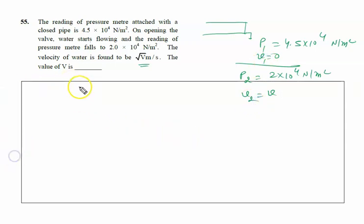If you apply Bernoulli's theorem for the same horizontal level, it will be P + ½ρV² = constant. So P₁ + ½ρV₁² = P₂ + ½ρV₂².